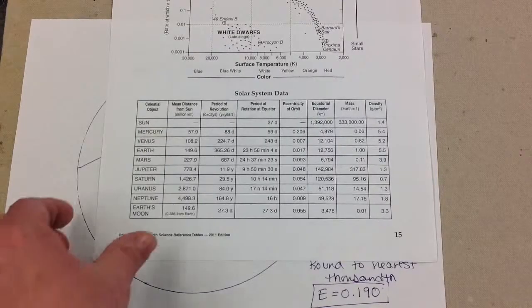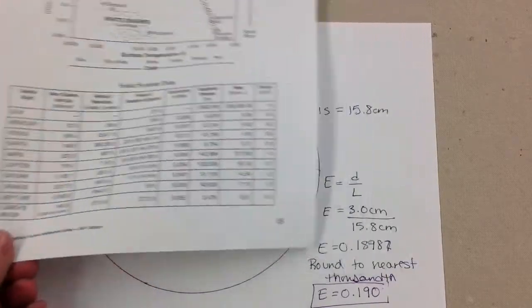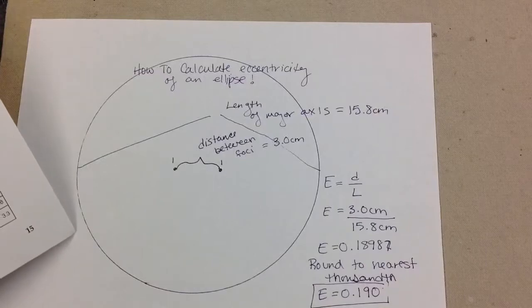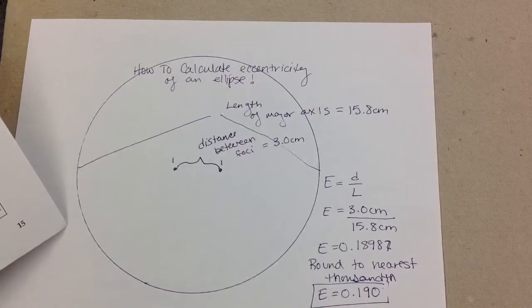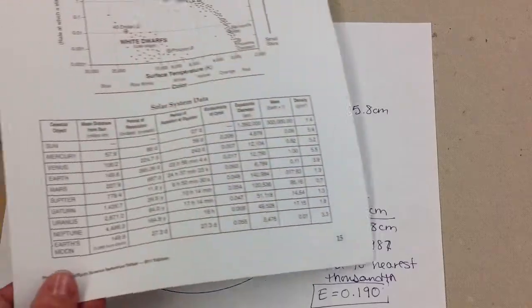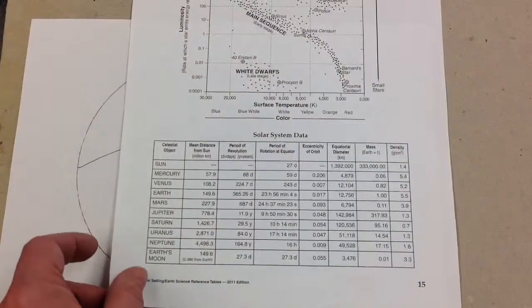And after calculating, using our formula from the front of our reference table, we can then evaluate our eccentricity value and figure out how does it fare with other planets?